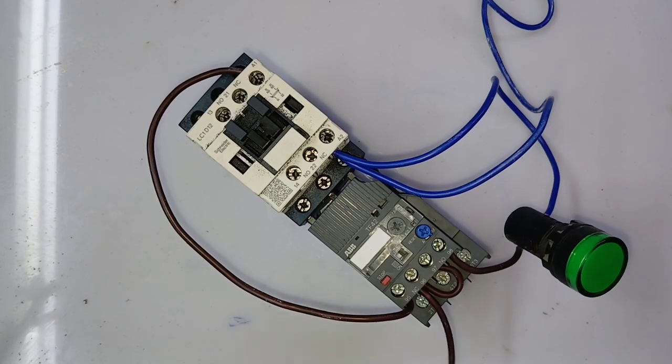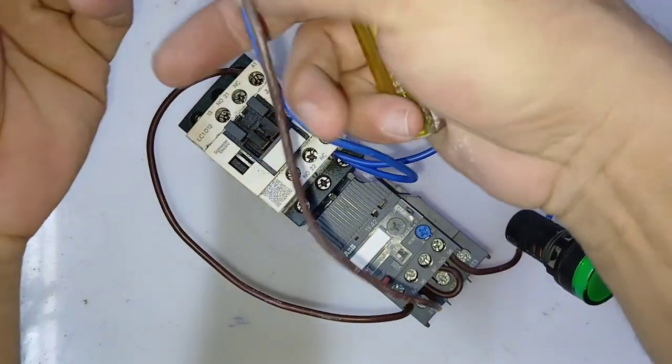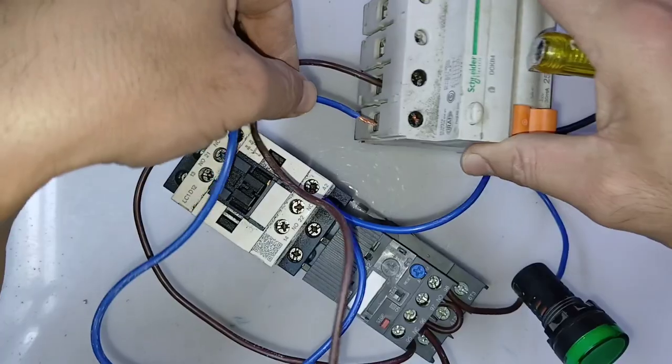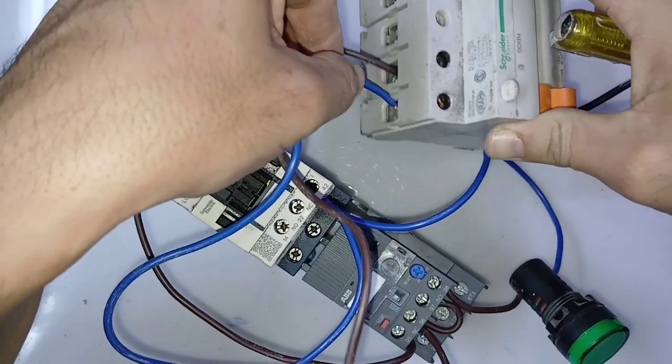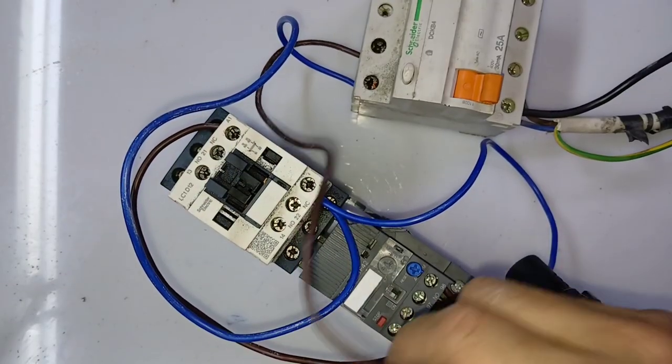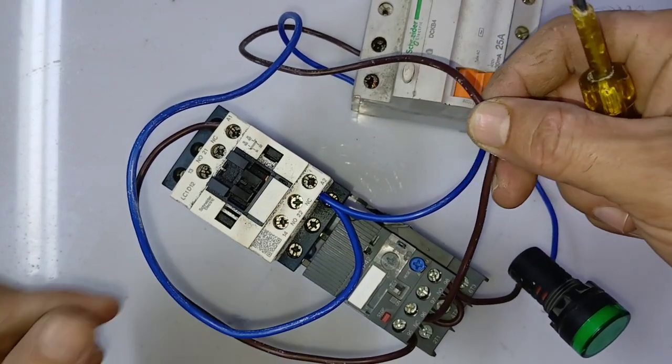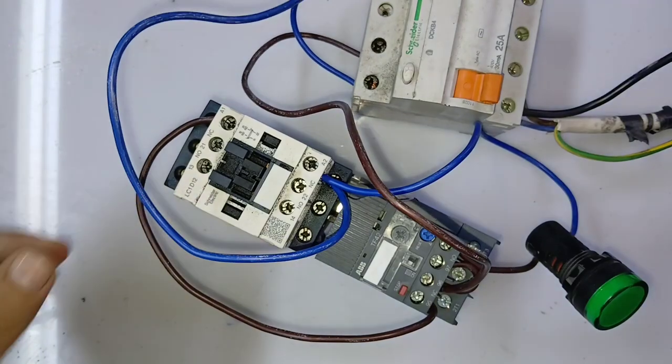Overload connects on 98. Now this is line and this one is neutral, so this will connect on RCCB and then we'll test. Okay, already connected.